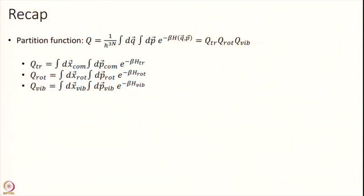Hello and welcome to module 16 of Chemical Kinetics and Transition State Theory. In the last module we developed the very basic idea of transition state theory, and for understanding that we need a little bit of knowledge of partition functions. We developed the basics of partition functions in the last module. Today we are going to make things much more concrete and go on from where we left. In the last module we partitioned the total number of variables into translational, vibrational and rotational, and we saw that the partition function gets separated into these three.